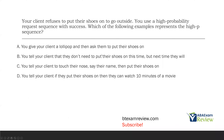Option A: you give your client a lollipop and then ask them to put their shoes on. That would be bribery — if you give the reinforcer first and then ask the learner to engage in the response, that is bribery. Option B: you tell your client that they don't need to put their shoes on this time, but next time they will — that looks like escape. Option C: you tell your client to touch their nose, say their name, then put their shoes on. Touch nose — high P; say name — high P; put shoes on — low P. Option D: if they put their shoes on, then they can watch 10 minutes of a movie. That's a contingency — it looks like the Premack principle. The only example of the high P sequence is C.